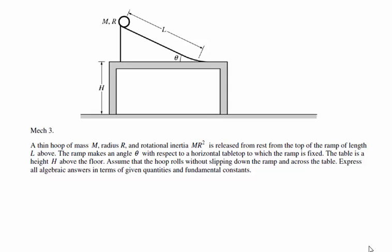It's released from rest at the top of a ramp. The ramp makes an angle theta, and the hoop rolls without slipping down the ramp.